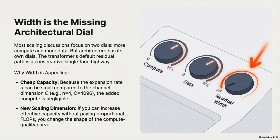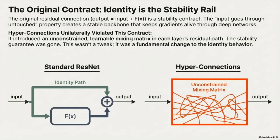The original residual connection is defined by that input-goes-through-untouched property - that's the stability contract, and it is non-negotiable. If you mess with that identity behavior, you have to replace it with something equally strong. HCC didn't. It unilaterally violated the contract without offering any replacement, just putting a learnable, unconstrained matrix in the path and hoping for the best, which explains the blowup. Even with its clever pre-maps and post-maps, it was doomed at scale.